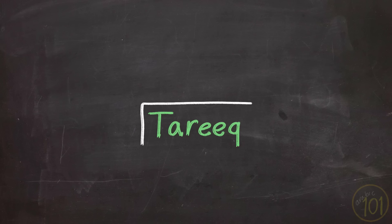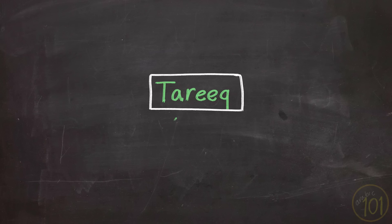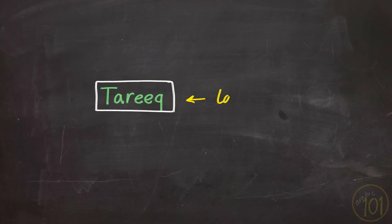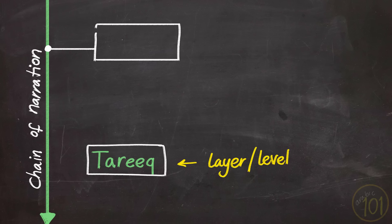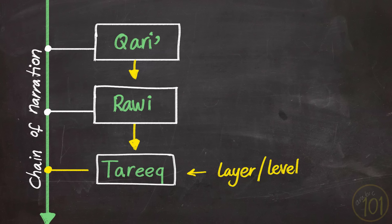The word tariq linguistically means path or way, and in terms of the study of the Qur'an, it refers to a layer or level of narrators in the Qur'an line of narration. So we have the layer of qari, the second layer is his student, the rawi, and the third layer and all beyond are called tariq.